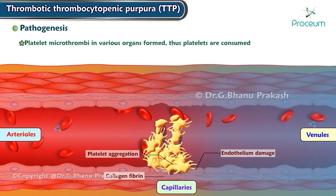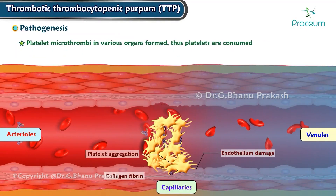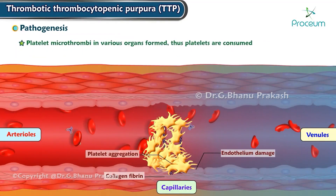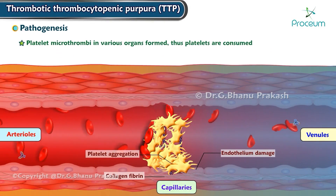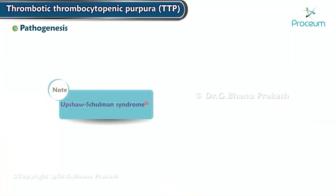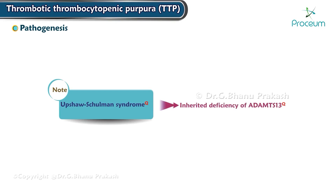Platelet microthrombi in various organs are formed and platelets are consumed. Note: Apsha-Schulman syndrome is the inherited deficiency of the ADAMTS13 gene.